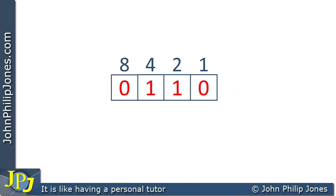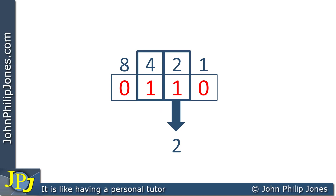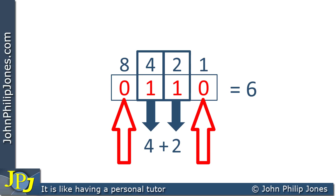Let's consider another example. I can tell straight away the value is six. There is a one in the two position, so I write a two, and there's also a one in the four position, so I write four. Adding those together gives six. There is no eight value and no unit value, because in both those positions there is a zero.